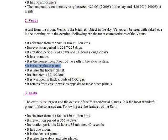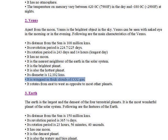Venus is the brightest planet and also the hottest planet. Its diameter is 12102 km. It is wrapped in thick clouds of CO2 gas and rotates from east to west, opposite to most other planets.